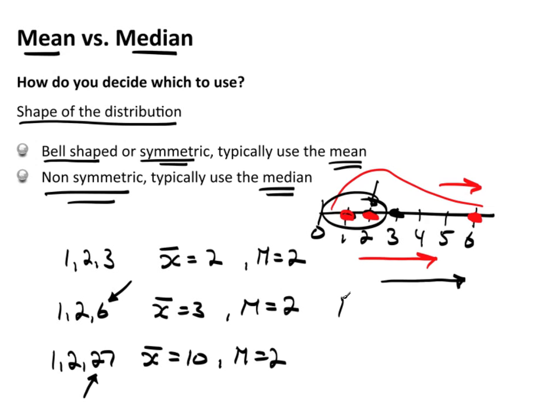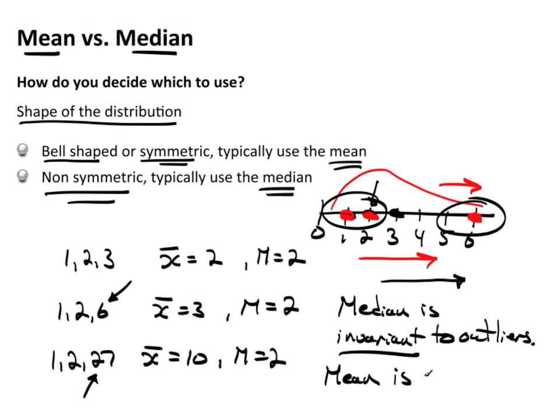We say that the median is invariant to outliers. That means, invariant simply means it doesn't vary. It doesn't change. You have an outlier, and that's what we're getting here. It is values far away from the bulk of what else is going on. And that has no effect on the median. The mean, on the other hand, is very sensitive to outliers.